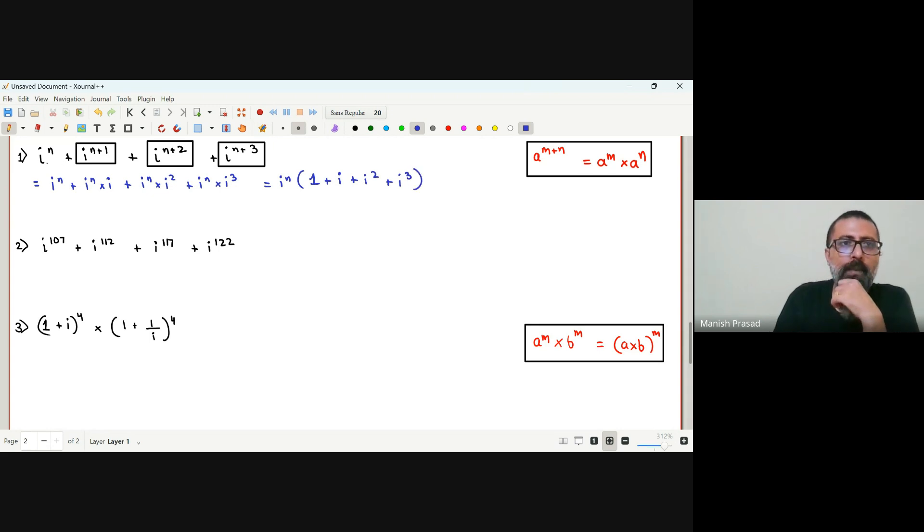So you are left with 1 plus i plus i square plus i cube. Now we have to know that this will remain like this. This is 1, i is i itself, i square is negative 1, and i cube is nothing but i square into i, that is negative i.